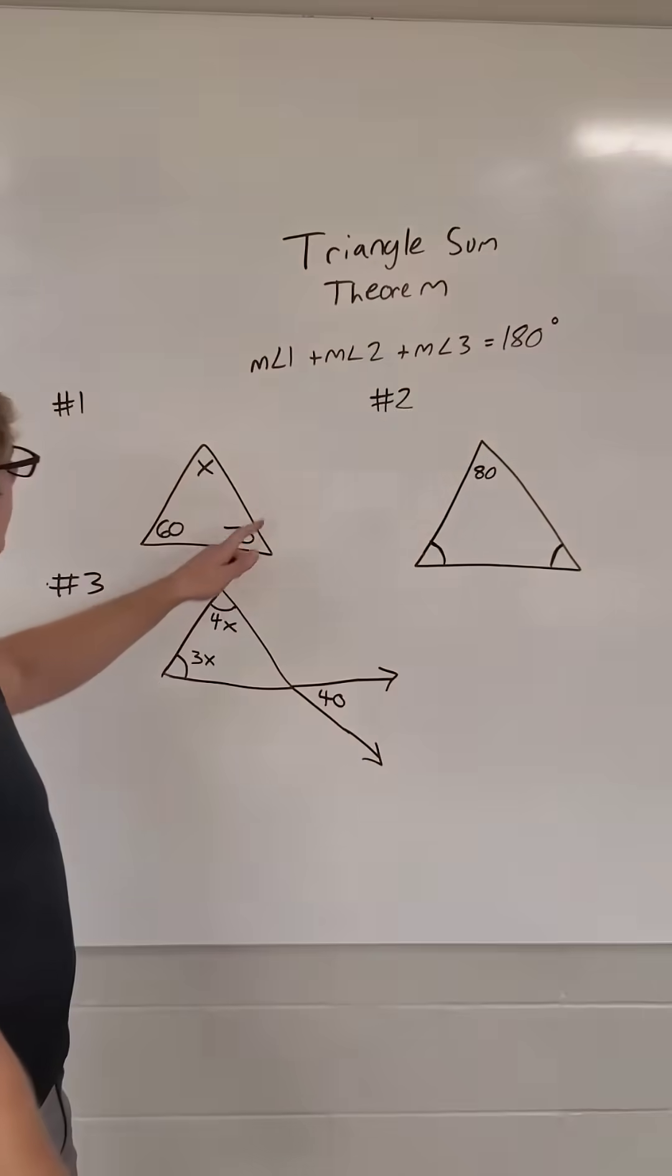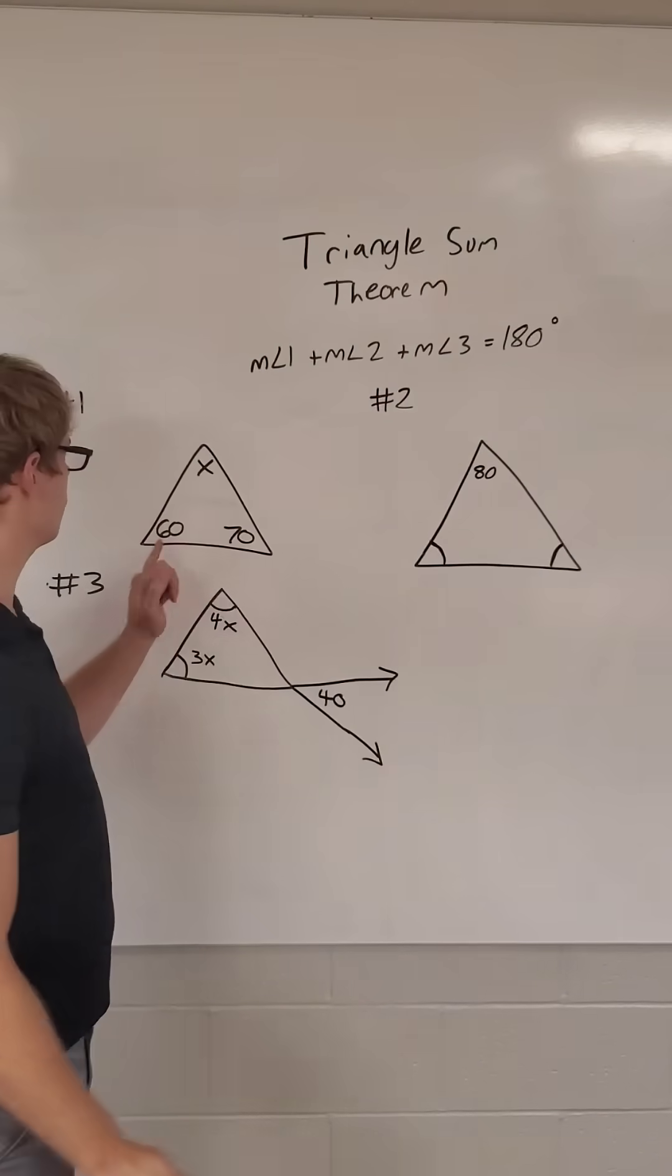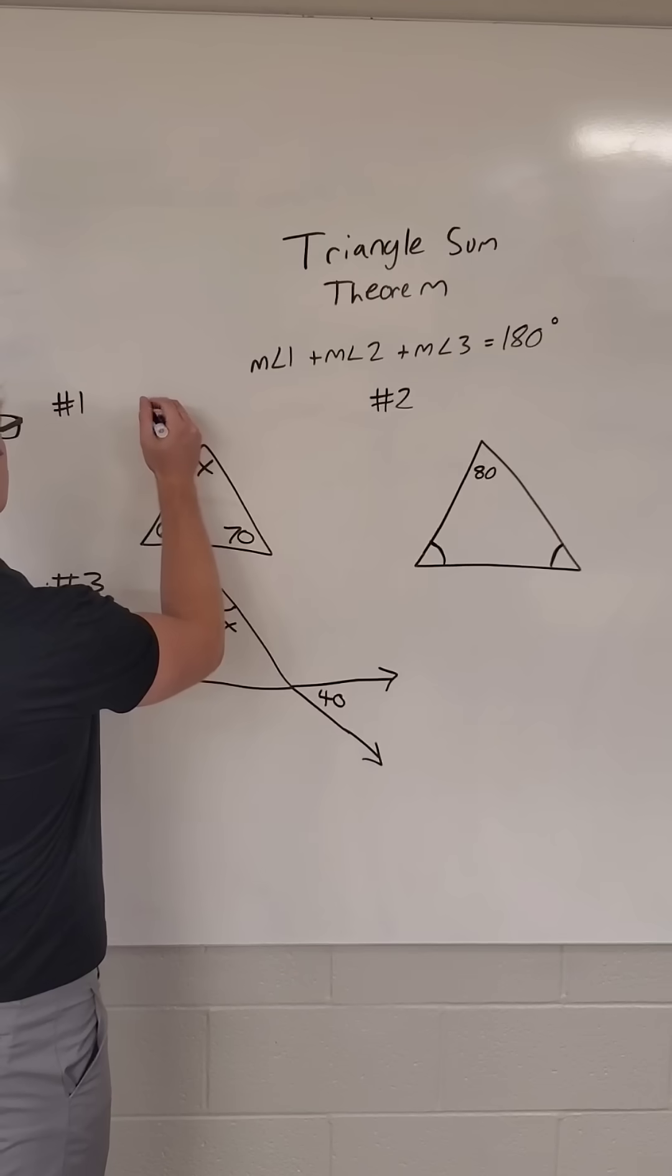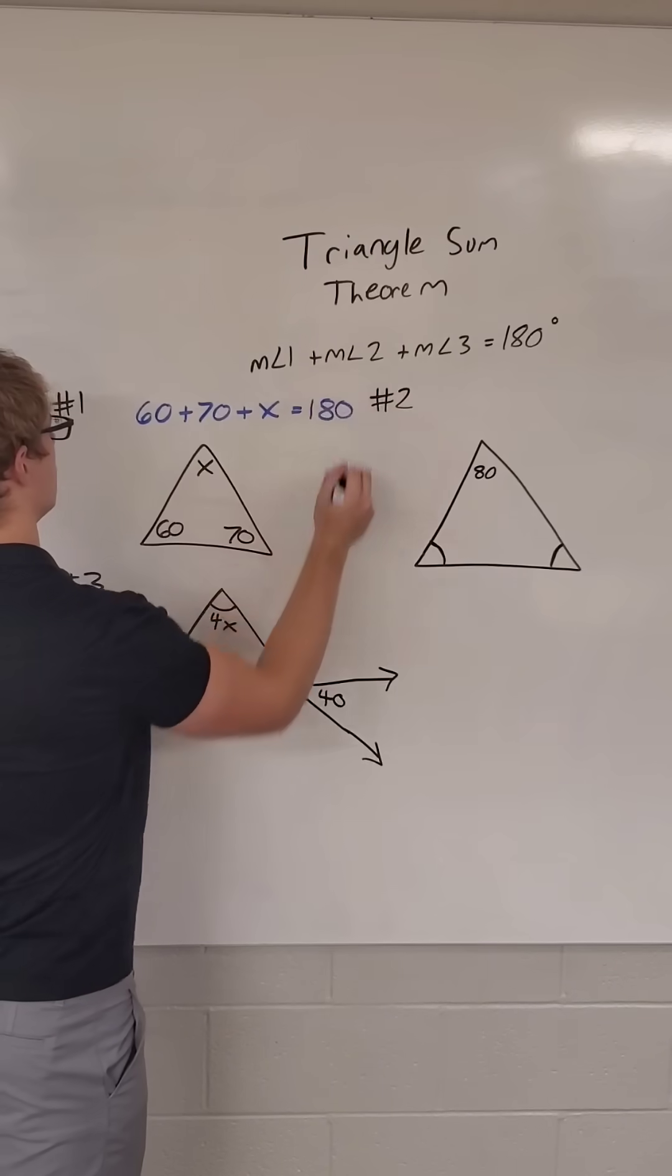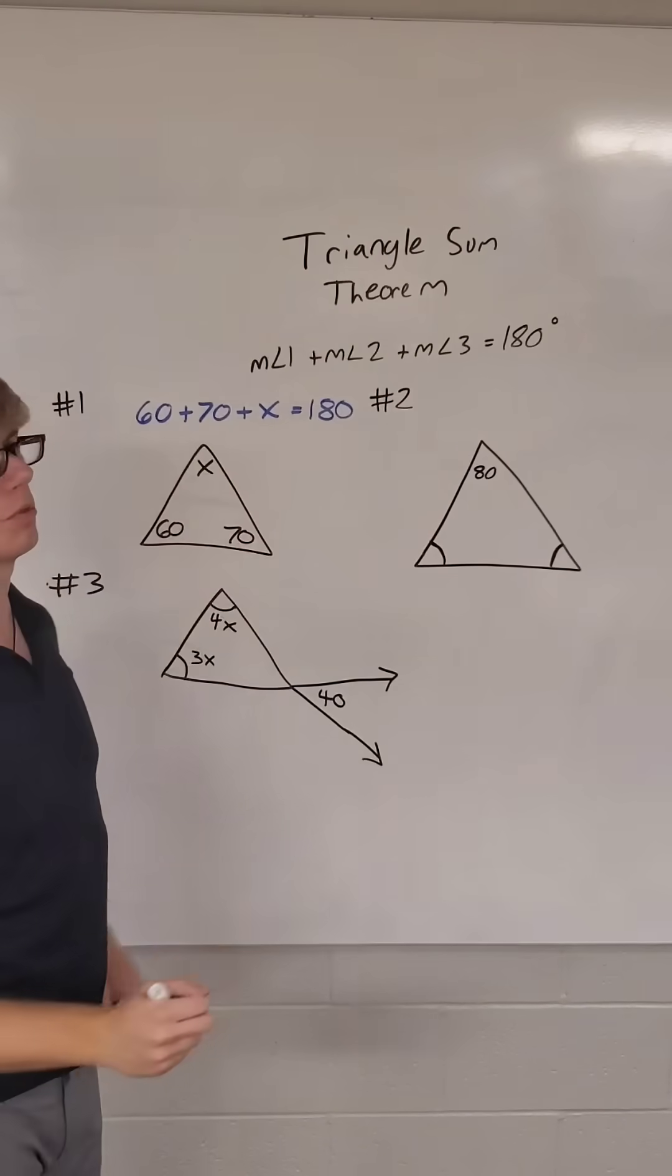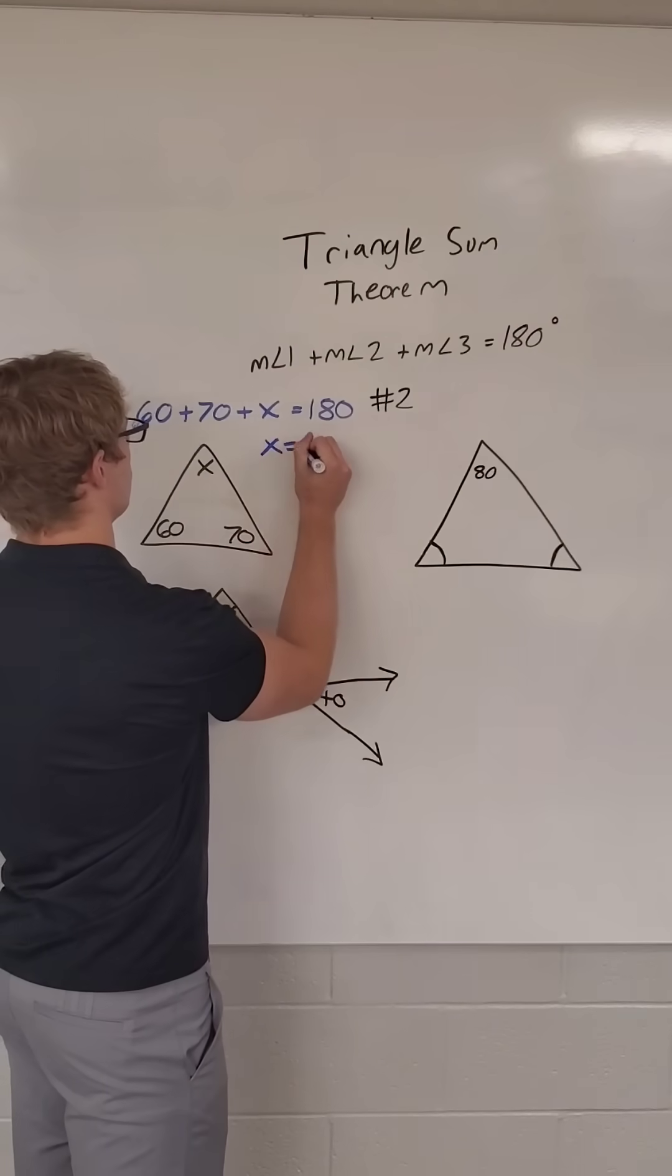So you can write an equation for each of these. First one, we're solving for that missing angle. We know two angles are 60 and 70. So I'm going to add 60 plus 70 plus x. That is equal to 180. If you were to subtract both of these from both sides, you would end up getting that x is equal to 50.